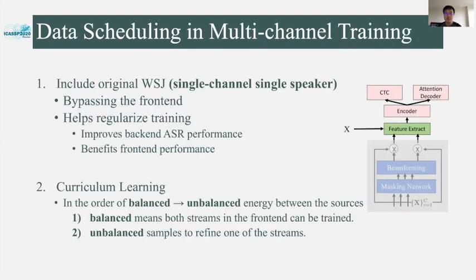When training the multi-channel multi-speaker end-to-end ASR model, we adopted data scheduling techniques. Using multi-channel multi-speaker data only does not guarantee good performance at the end of training. So we include the original Wall Street Journal corpus, which is single-channel single-speaker data, in the training set. During training, such single-channel data bypasses the frontend and starts forward propagation from the feature extraction step directly. This helps regularize performance during training, improves the backend ASR, and in return benefits the frontend performance.